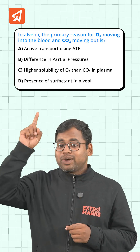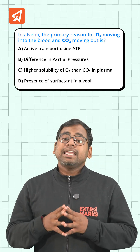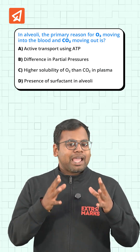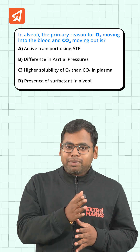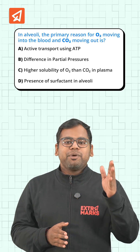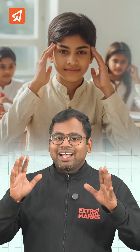Students often get mixed up when it comes to how oxygen and carbon dioxide actually move across the alveolar membrane. See this question on your screen: in alveoli, the primary reason for oxygen moving into the blood and carbon dioxide moving out is?